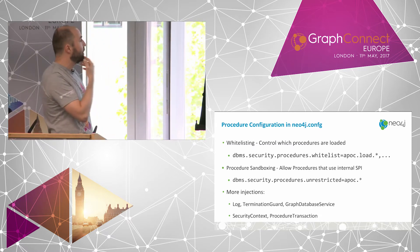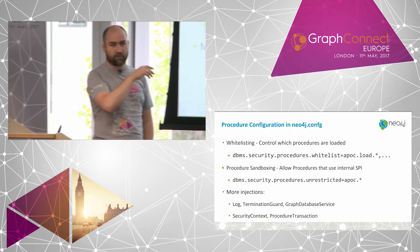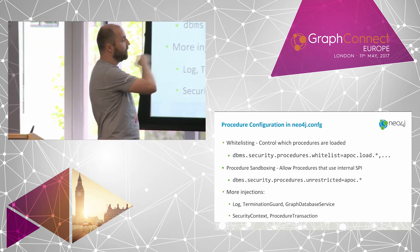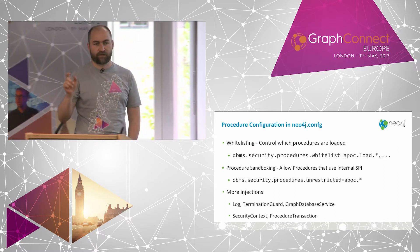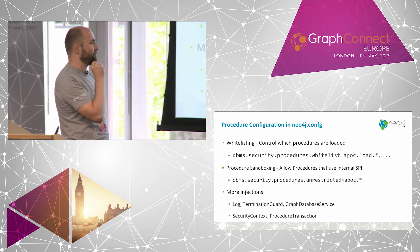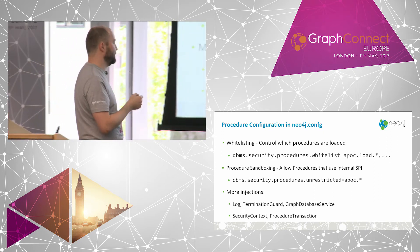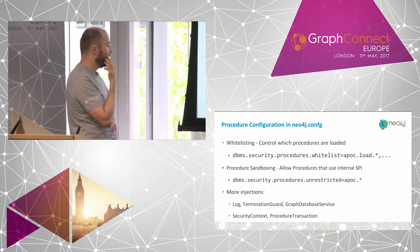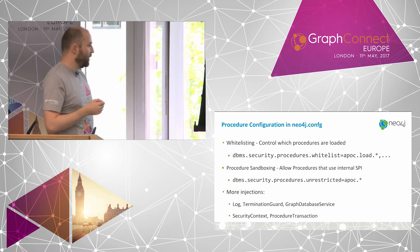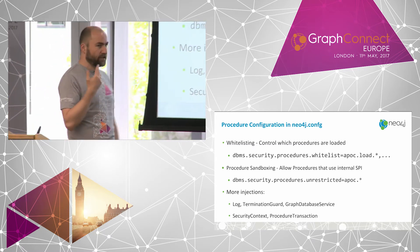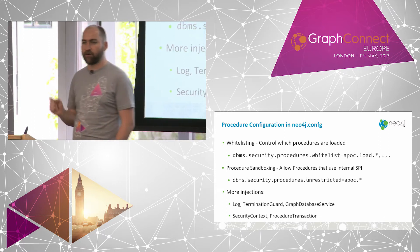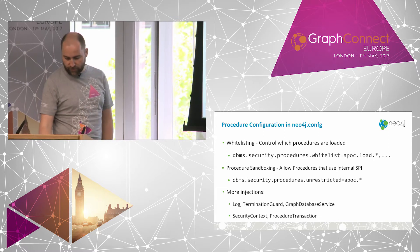If you look at this in detail, the whitelisting is just a comma-separated list of procedures with wildcards. You can specify which procedures you want. Similarly for sandboxing, you can have a configuration entry that says these procedures I trust despite them using internal APIs. Some of the APOC procedures actually use internal APIs, so you might want to put those you want to use into the unrestricted list. If you develop procedures, there are many more things that can be injected as public APIs — especially things that allow you to control transaction termination, and give you access to security information like who's the current user, and whether they're in an admin or specific role.